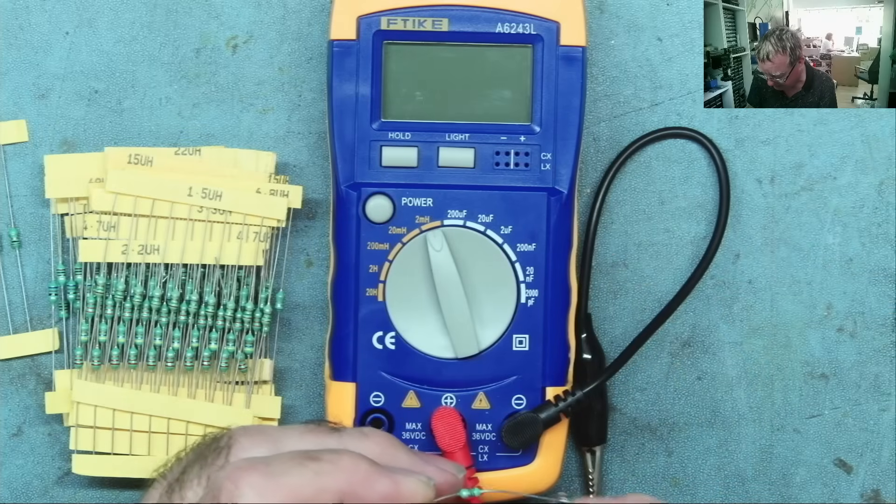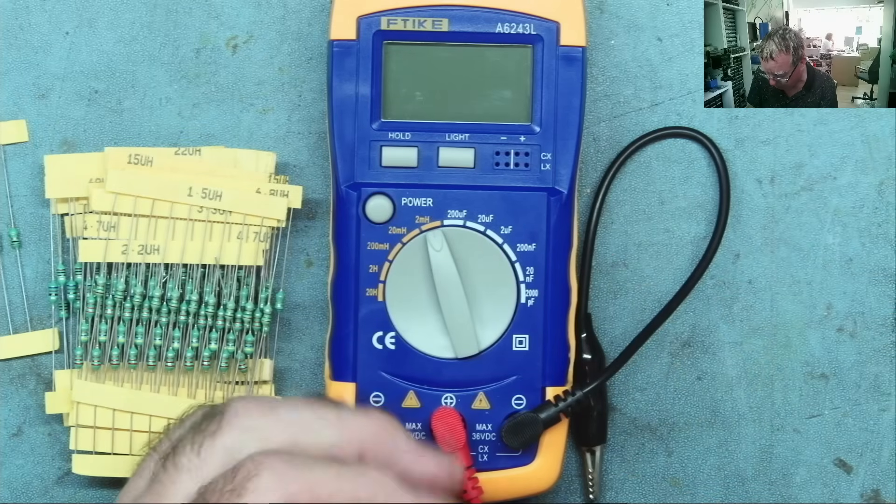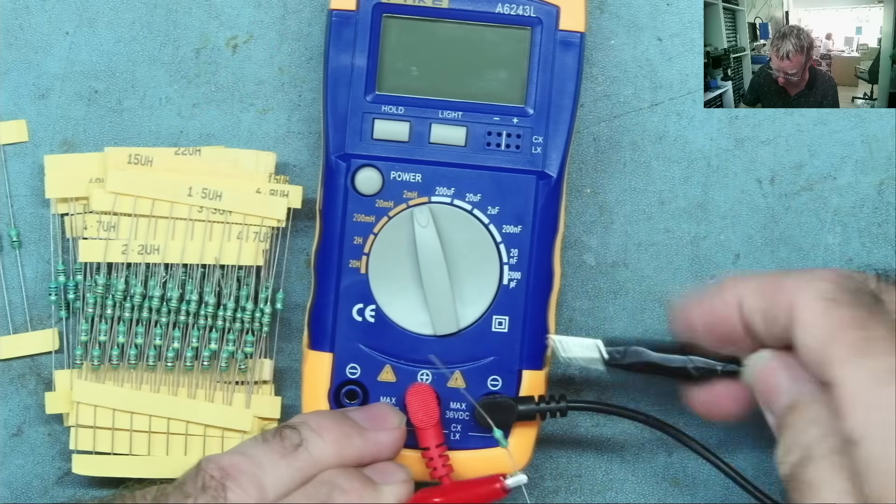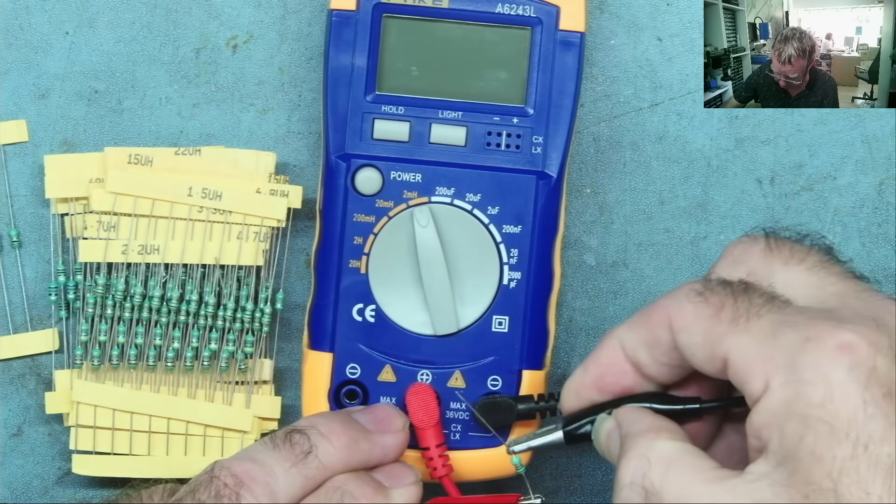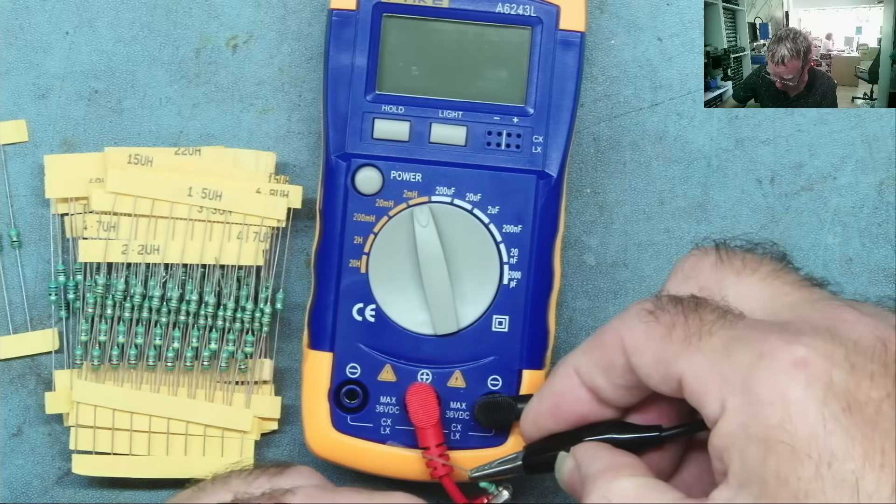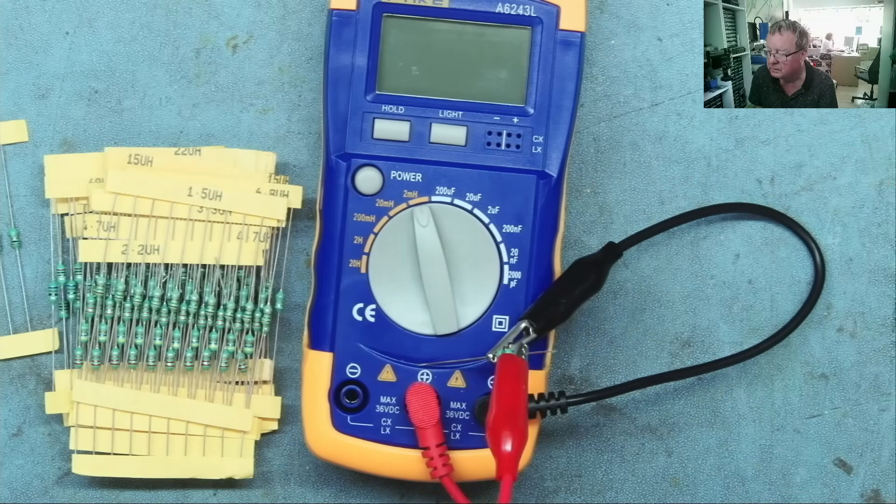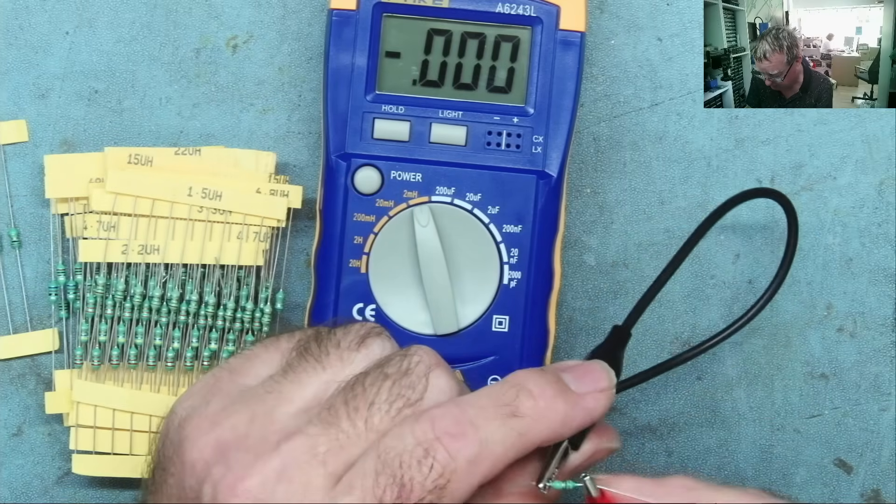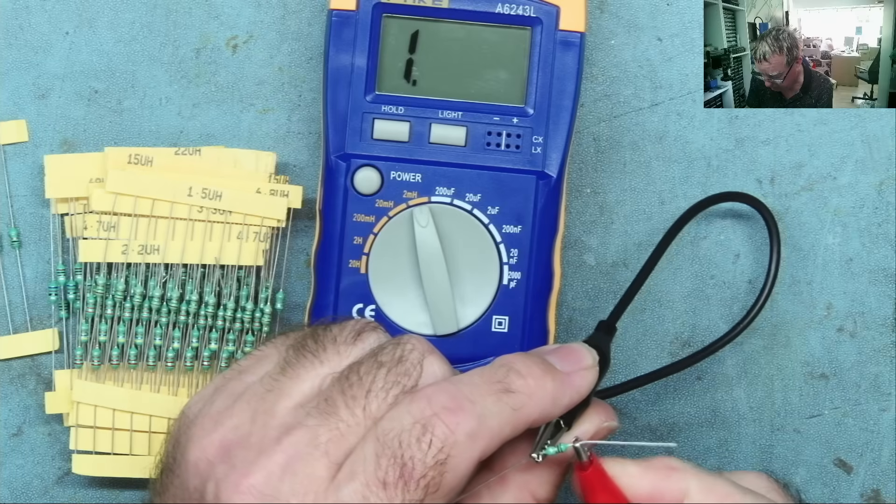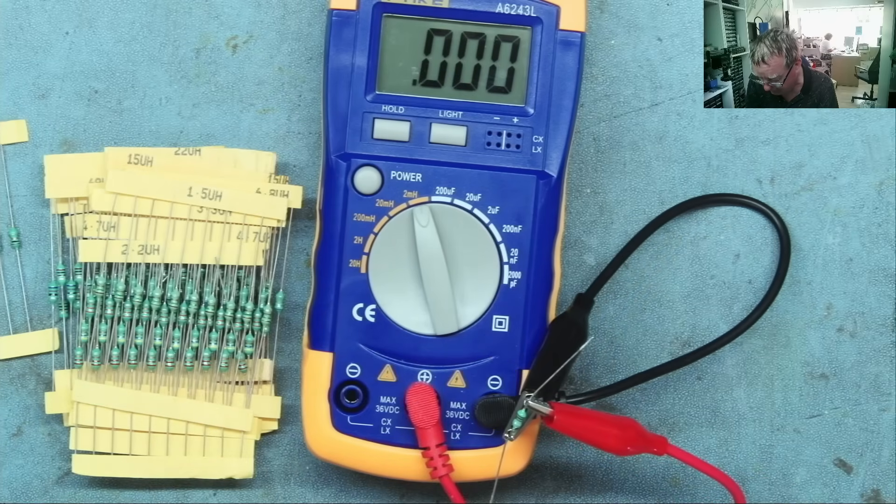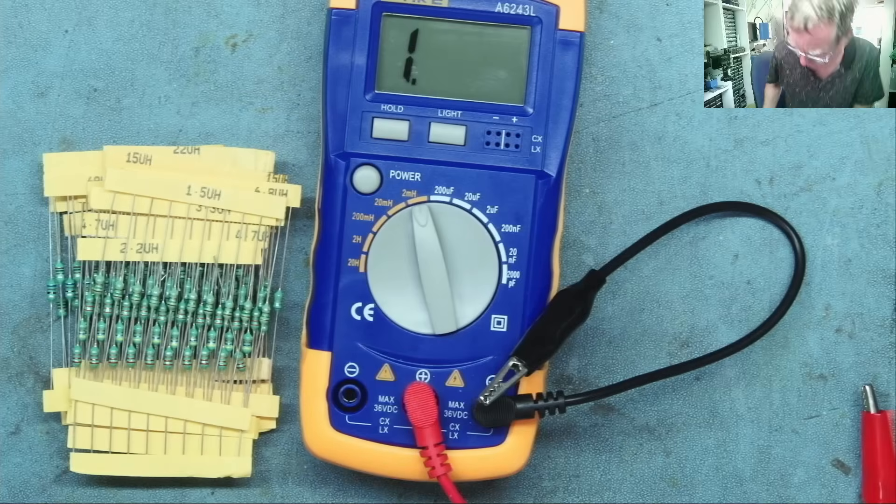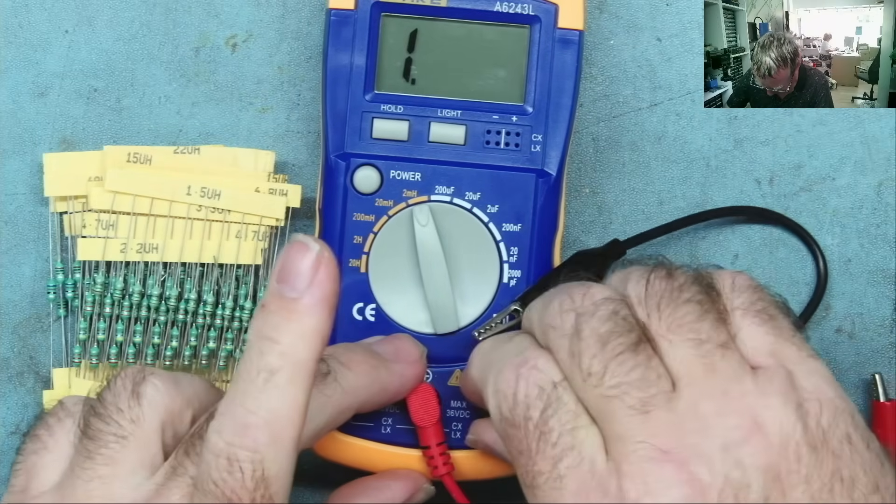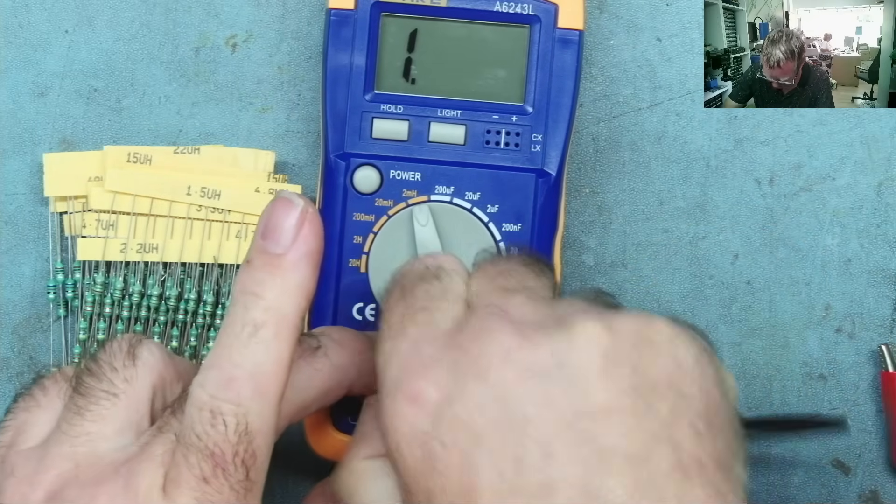We'll start with the 1 microhenry and see if it will read this. So we'll go to the 2 millihenry range. It does mention in the manual, when reading low resistance, use short leads. Well, these are the leads that came with it. So let's try. I will clip the leads as close to the components as I can, at least. Let's see what it does. So we go in there. And that says 0.